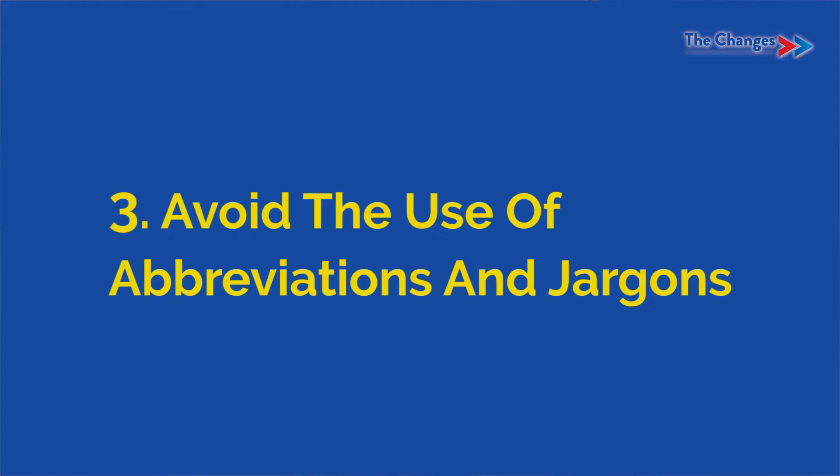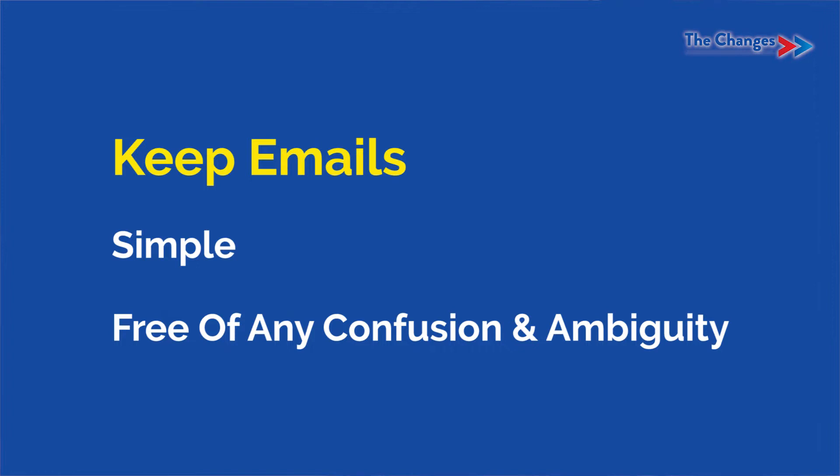Number three, avoid the use of abbreviations and jargons. Too often, business people put many technical terms into their email, mistakenly thinking that jitna hum difficult language likhenghe, utna achha impression hum receiver par create karenghe. Magar, hota kya hai? Too many jargons aur aisi abbreviations jo bahut common nahi hain, wuh receiver ko confuse aur irritate kar sakte hain. So, avoid using any such jargons and keep your emails simple.